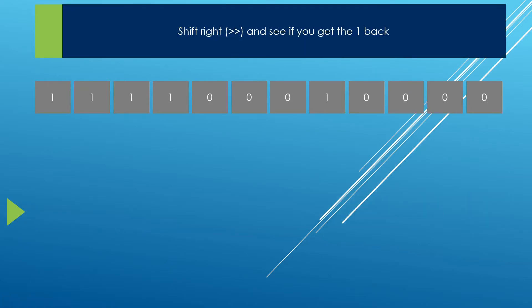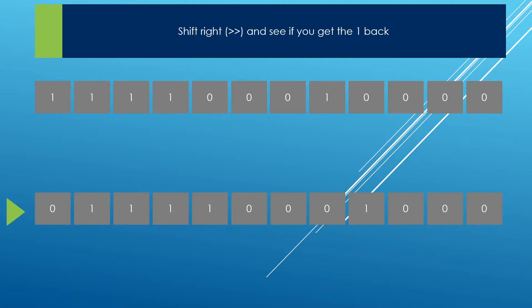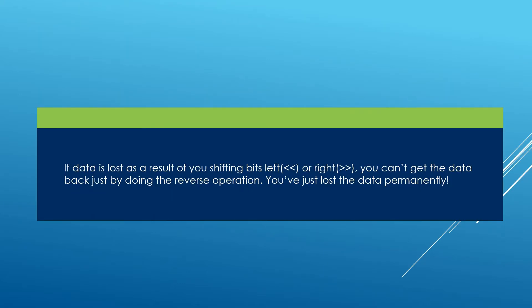What would happen if you shift right back? If you do that, you're not going to get your one back. You're going to pad in with a zero, because once you throw off a piece of data, you can never get it back — it is lost permanently. If data is lost as a result of shifting bits left or right, you can't get it back just by doing the reverse operation. You've lost the data and you'll never get it back.